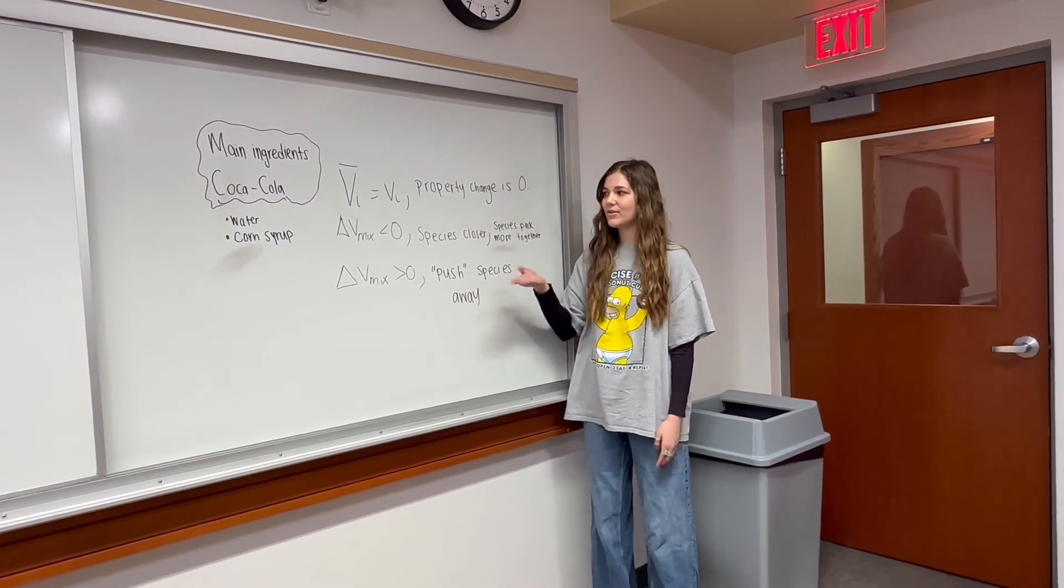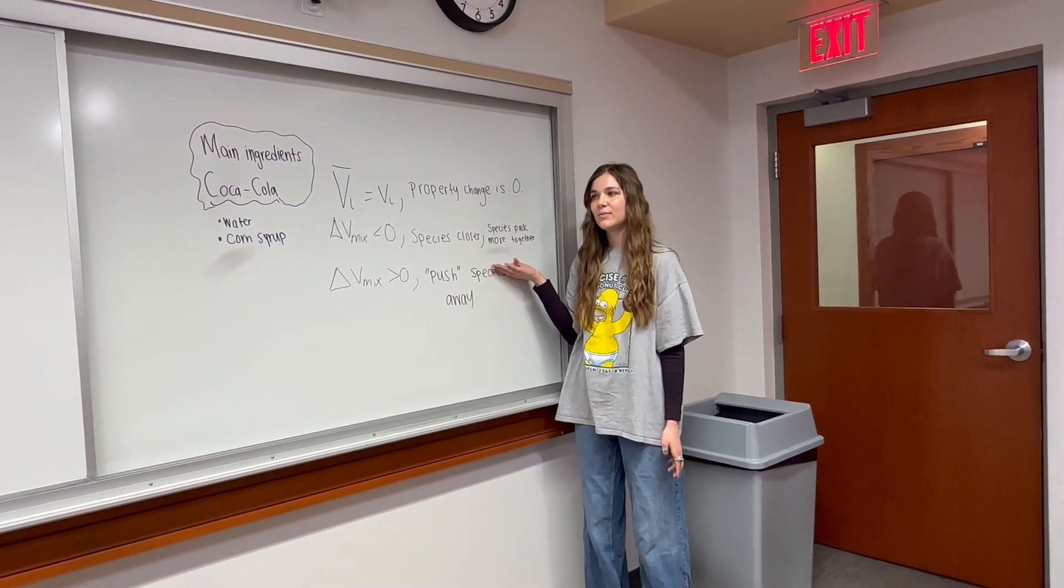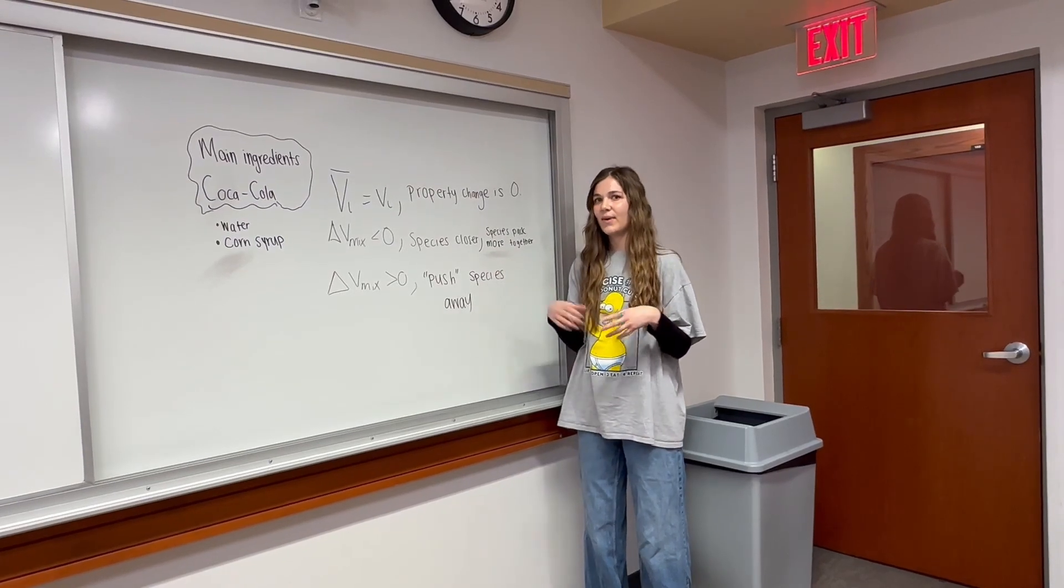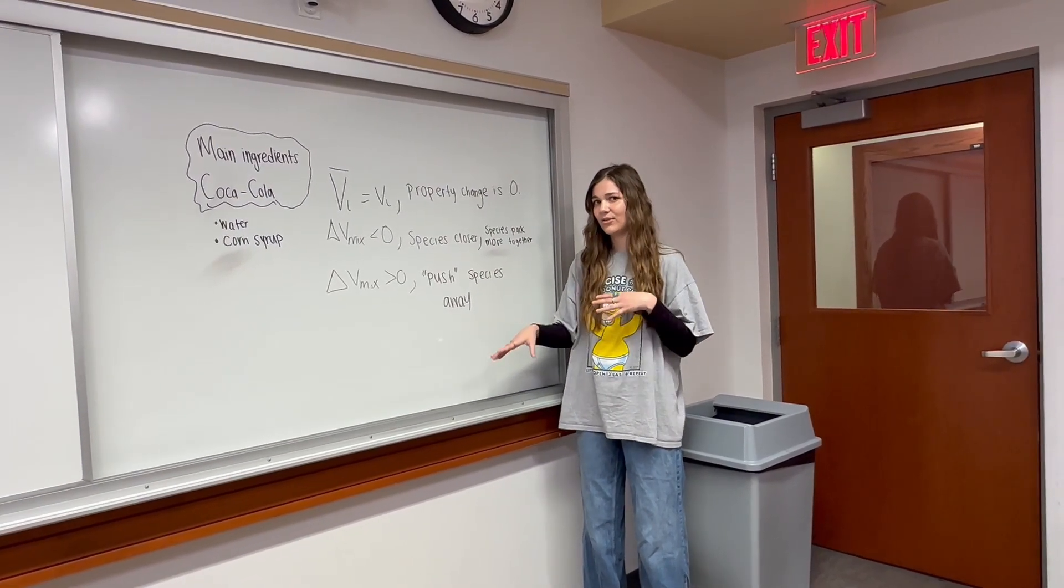The first one is equal to zero. The second case is if it's less than zero, which means the species are closer and packed more tightly together as opposed to the species being individually by themselves.